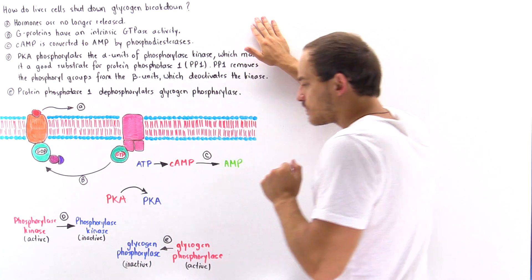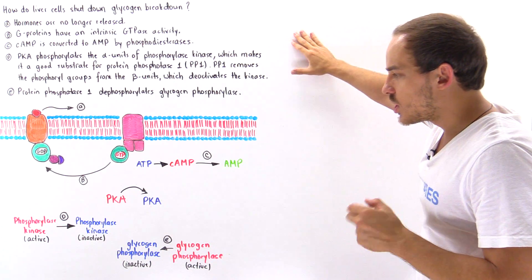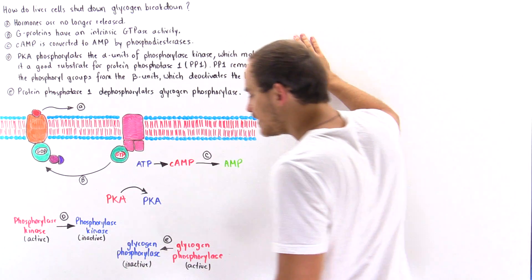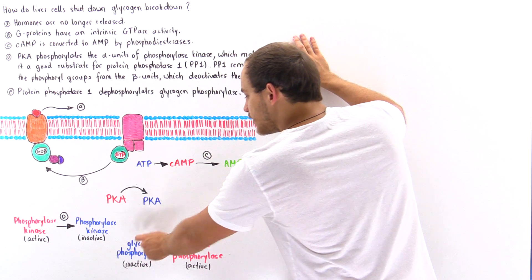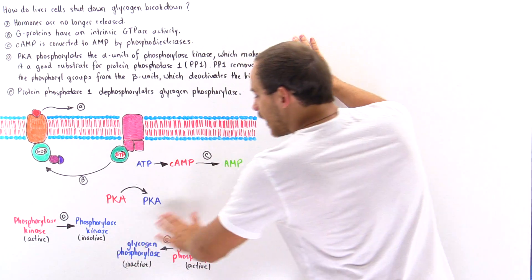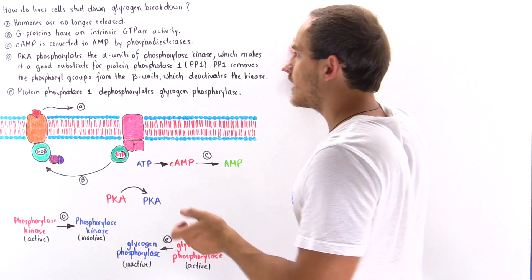In D and E, what we basically want to do is we want to inactivate the phosphorylase kinase that is needed to activate the glycogen phosphorylase, and we also want to inactivate the glycogen phosphorylase that is ultimately needed in step one of glycogen breakdown.